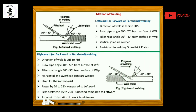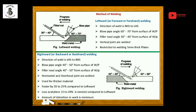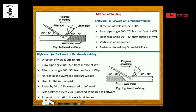For the rightward technique — also called backward or backhand welding — the direction of the weld is from left-hand side to right-hand side. The blow pipe angle is 40 to 50 degrees from the surface of the workpiece, and the filler rod angle is also 40 to 50 degrees from the surface of the workpiece.